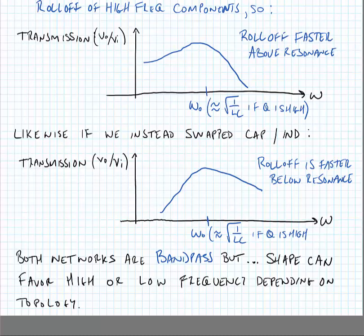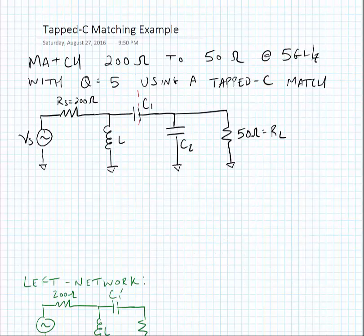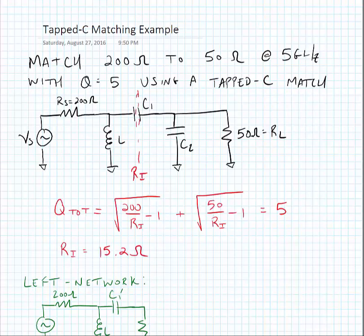Following the OneNote lecture notes, we'll do an example of a tapped capacitor matching network matching from 200 ohms to 50 ohms at 5 gigahertz with quality factor equal to 5. Our first step is to find the intermediate impedance. We know Q_total equals 5, so we solve for Q_left and Q_right simultaneously to find RI equals 15.2 ohms.